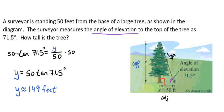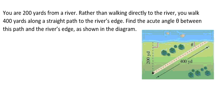Let's take a look at another example. Here, you are 200 yards from a river, and rather than walking directly to the river, you walk 400 yards along a straight path to the river's edge. So we want to find the acute angle theta between this path and the river's edge, as shown in this diagram.